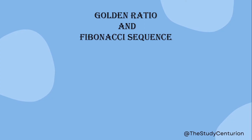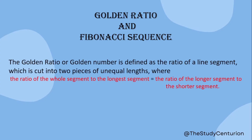We encounter the golden ratio in daily life. First of all, what is the golden ratio? It is defined as the ratio of a line segment which is cut into two pieces of unequal lengths. For example, I cut a 10 cm segment into two pieces of unequal length — not 5 cm and 5 cm, but two different unequal lengths.